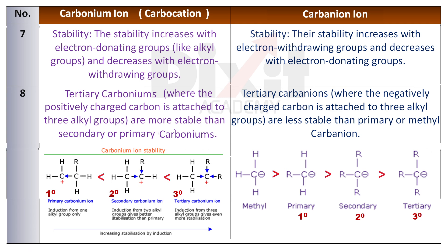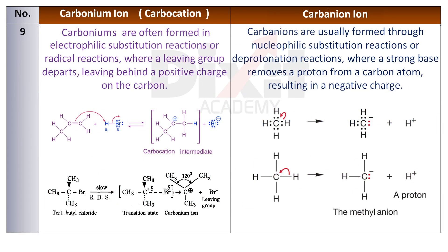Point number 9: Carbonium ions are often formed in electrophilic substitution reactions or free radical reactions, where a leaving group departs, leaving behind a positive charge on the carbon. Carbanions are usually formed through nucleophilic substitution reactions or deprotonation reactions, where a strong base removes a proton from a carbon atom, resulting in a negative charge. Thank you.